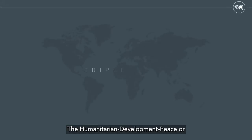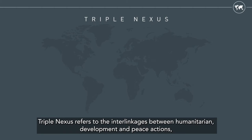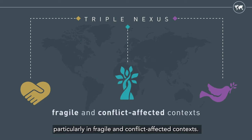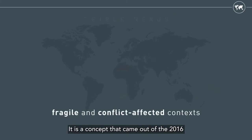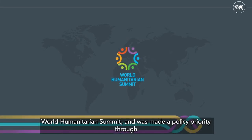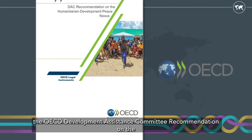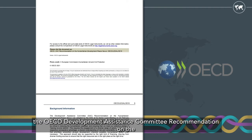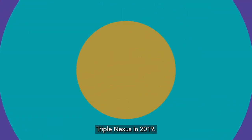The Humanitarian Development Peace, or Triple Nexus, refers to the interlinkages between humanitarian, development and peace actions, particularly in fragile and conflict-affected contexts. It is a concept that came out of the 2016 World Humanitarian Summit, and was made a policy priority through the OECD Development Assistance Committee recommendation on the Triple Nexus in 2019.